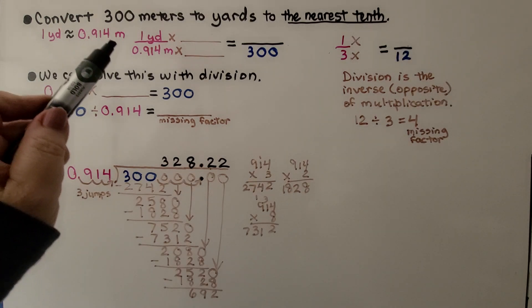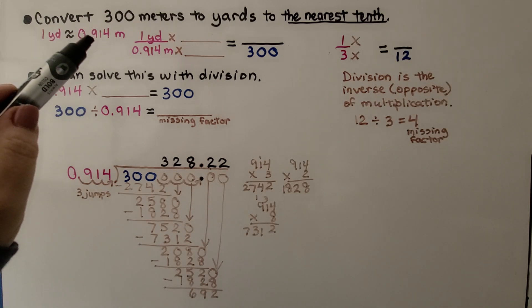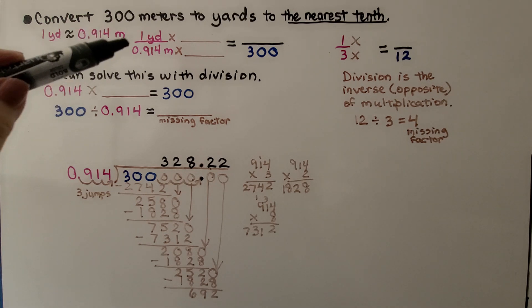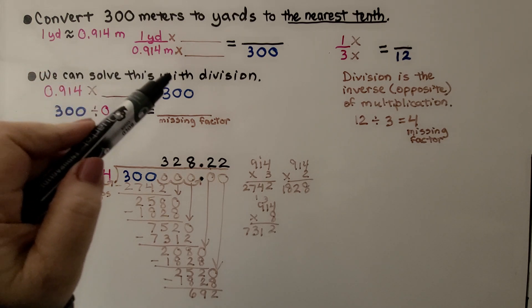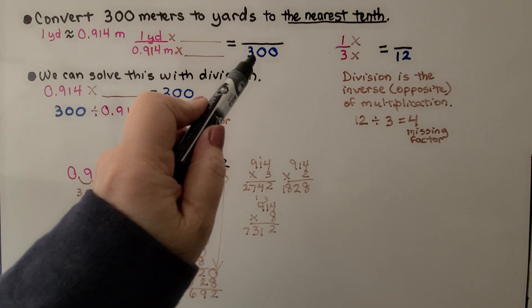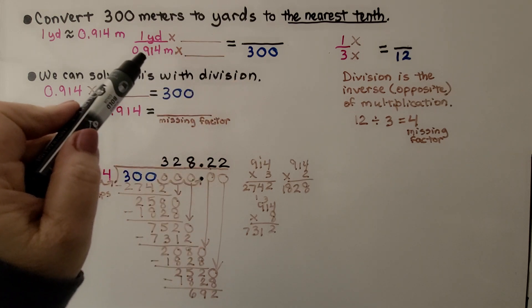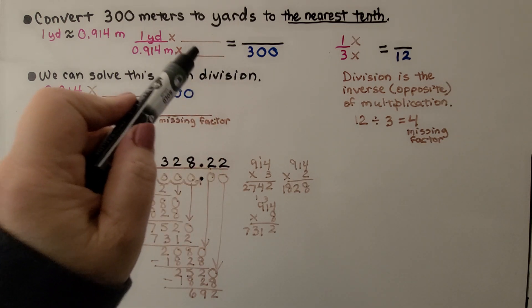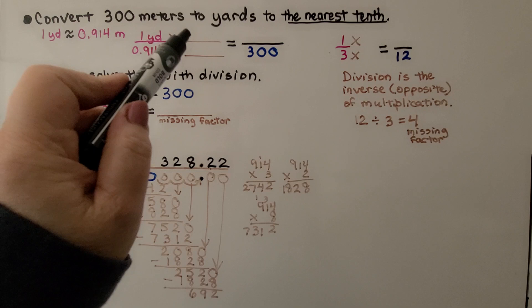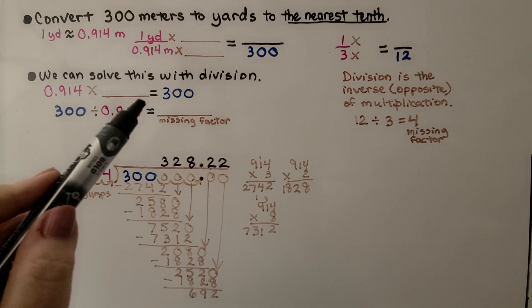Here it's telling us to convert 300 meters to yards to the nearest tenth. Looking on our chart, we saw that one yard is approximately 0.914 meters. So we've got one yard to 0.914 meters. And we need to convert the meters and yards to make a proportion. So what do we multiply this 0.914 by to equal 300? Once we know what we can multiply that by, we can multiply the numerator by the same thing to find out what goes here.